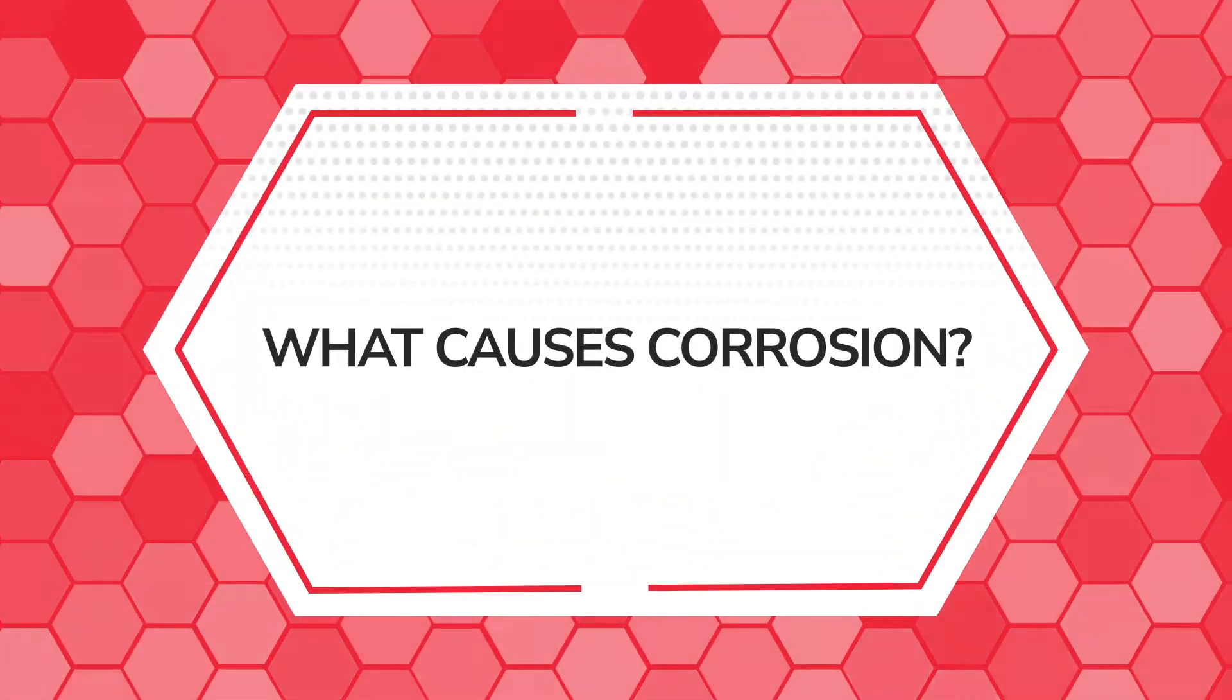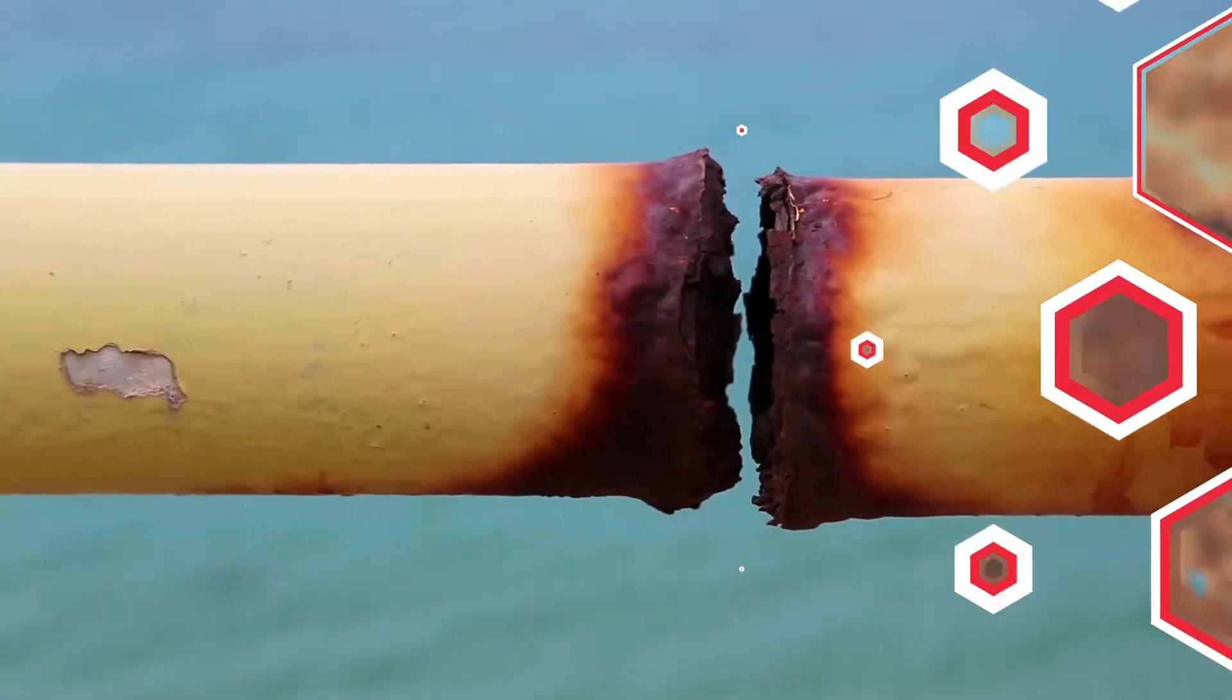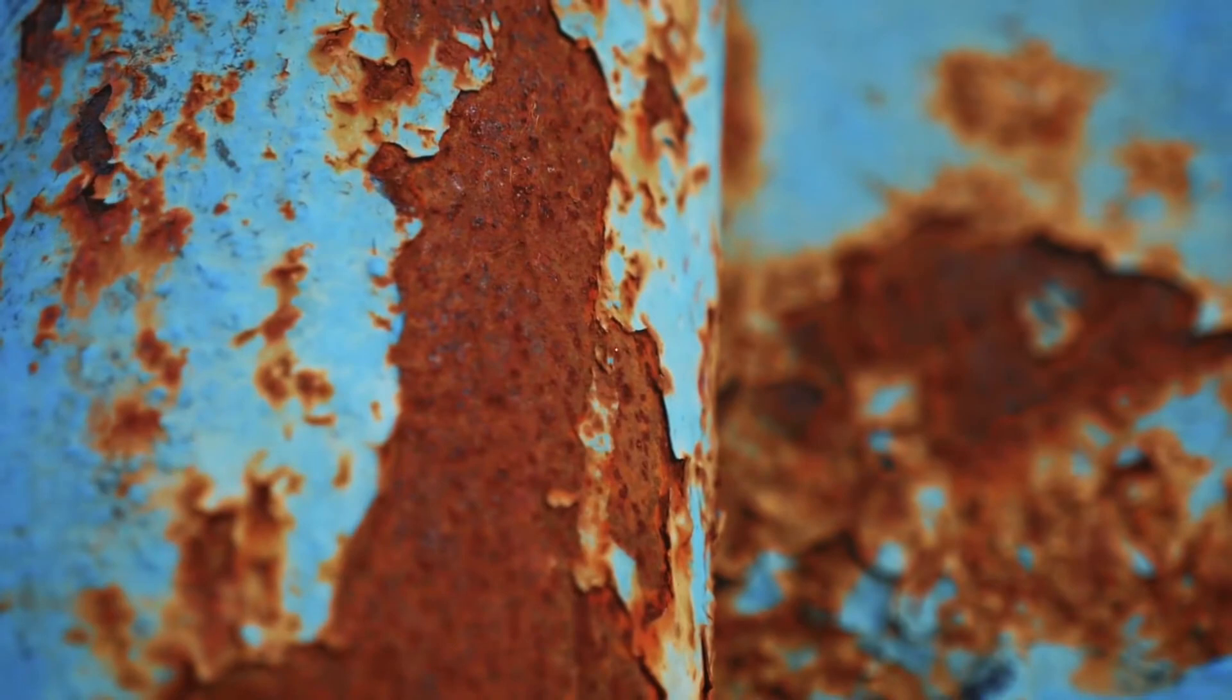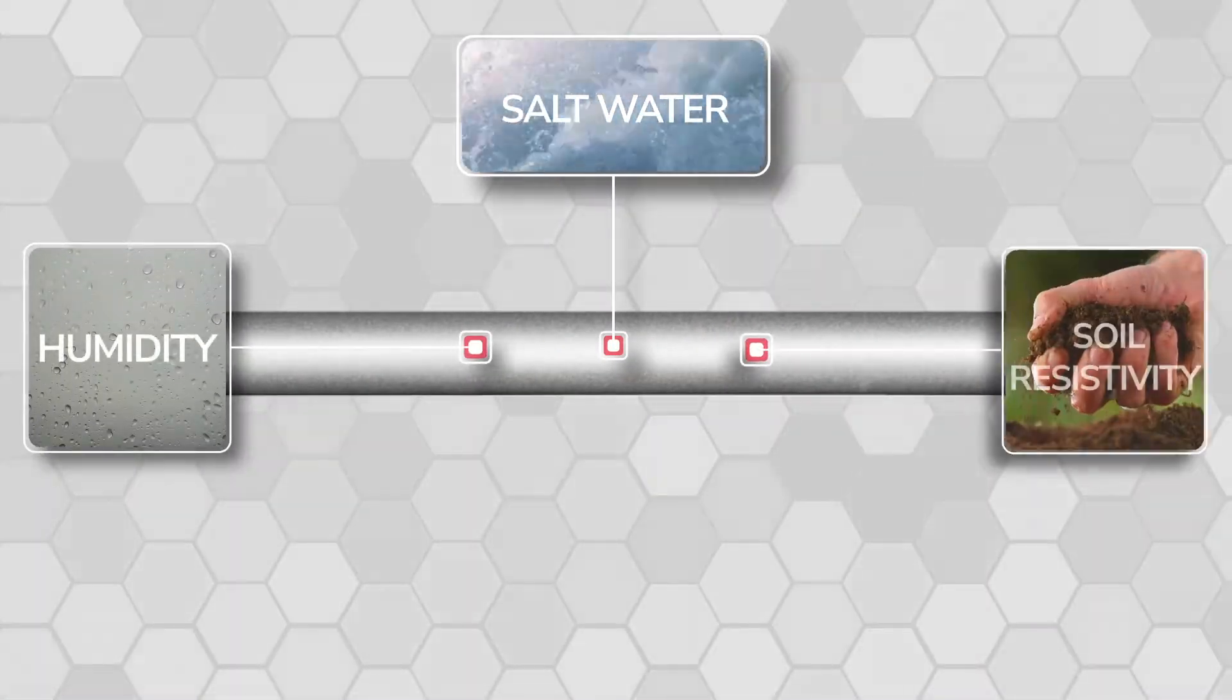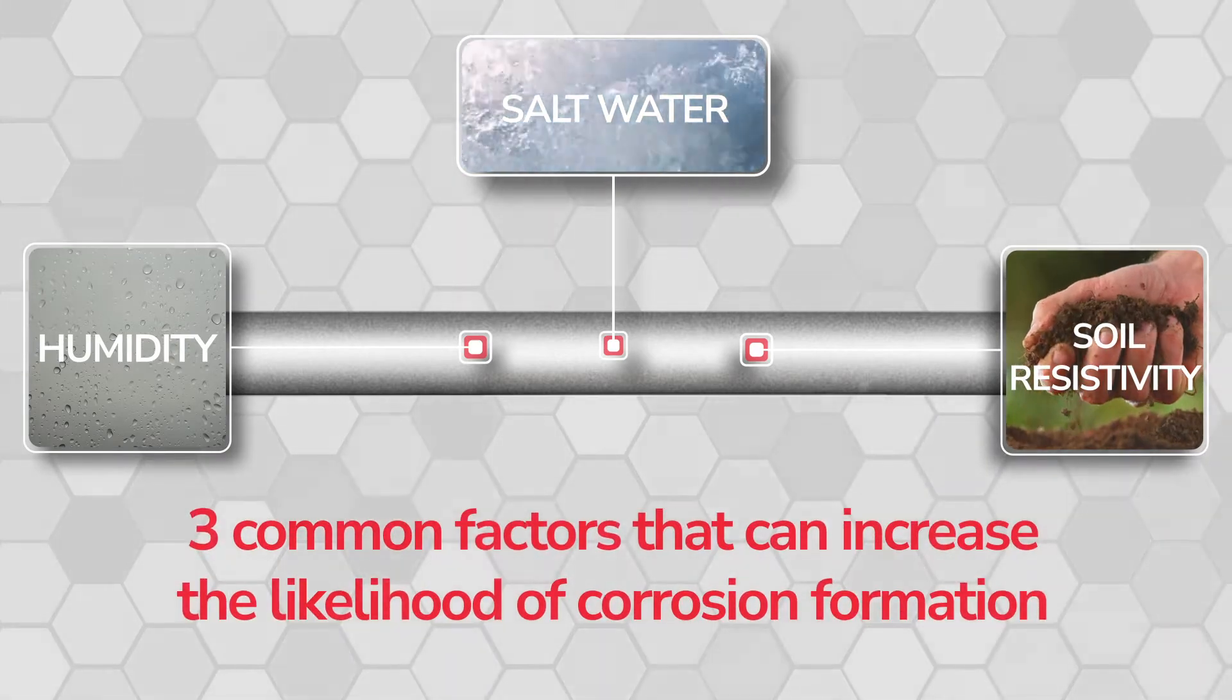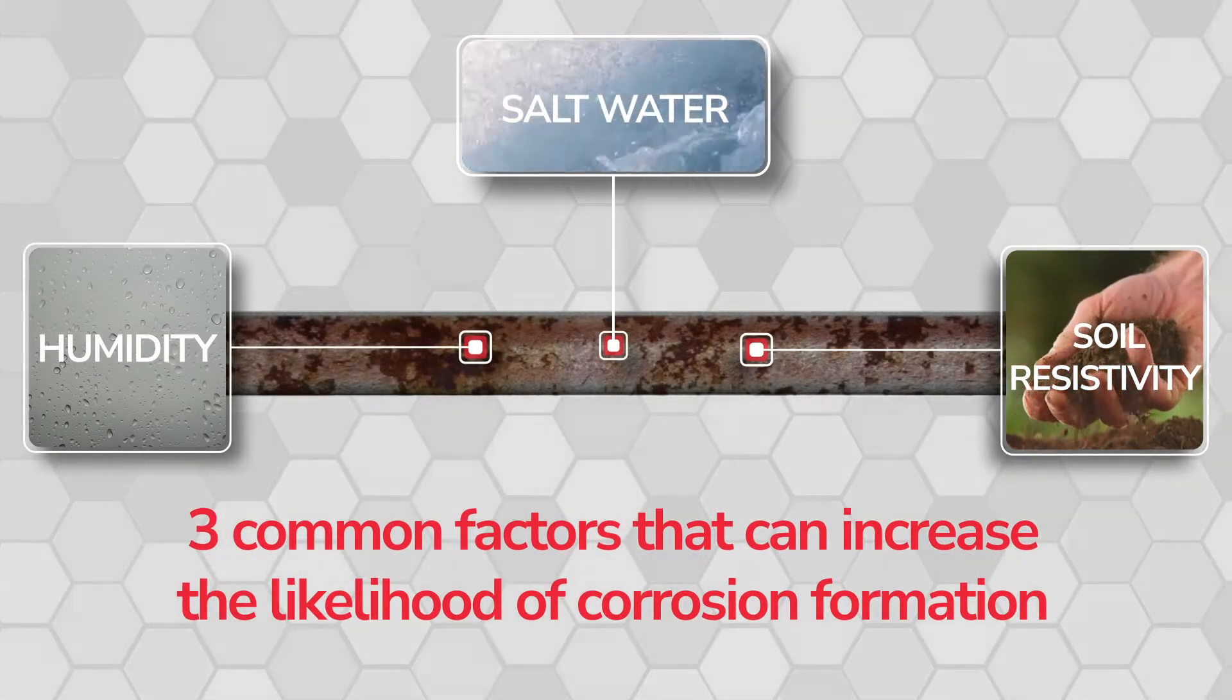What causes corrosion? Environmental factors can quickly deteriorate materials, especially metals. Exposure to salt water, humidity, and soil resistivity are three common factors that can increase the likelihood of corrosion formation.